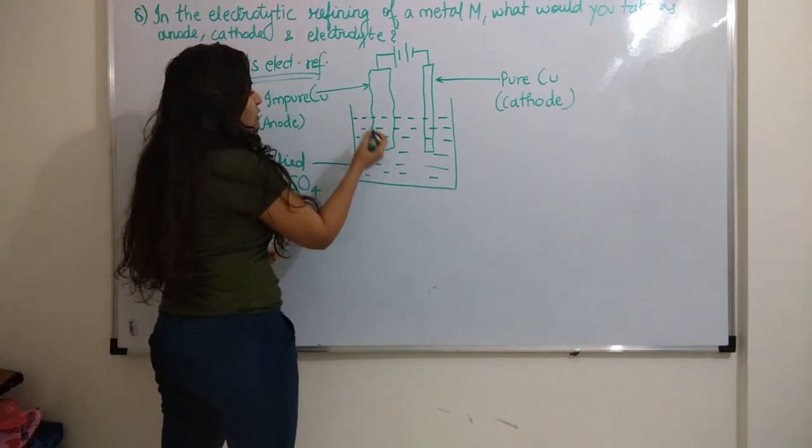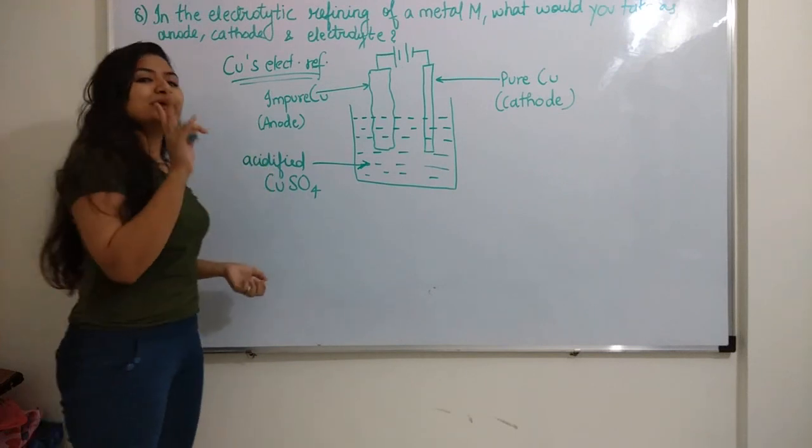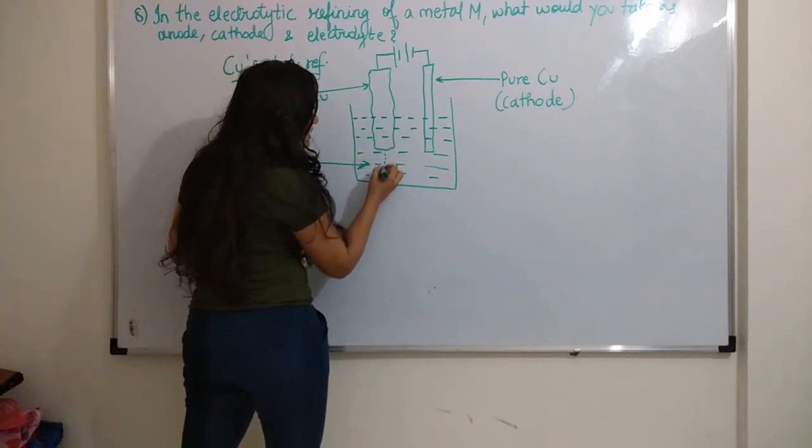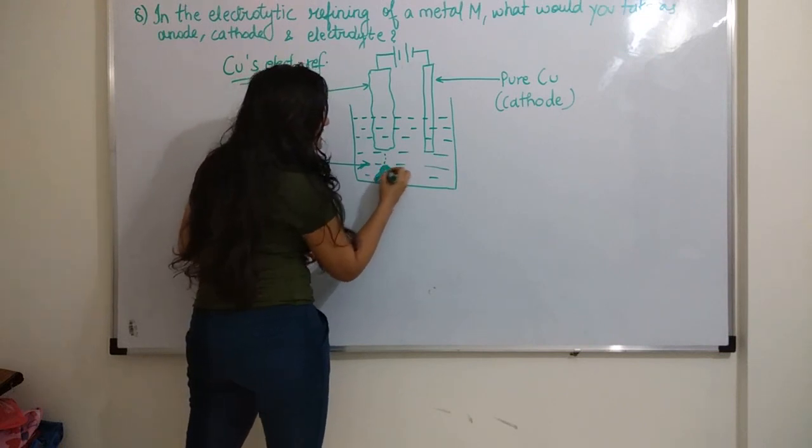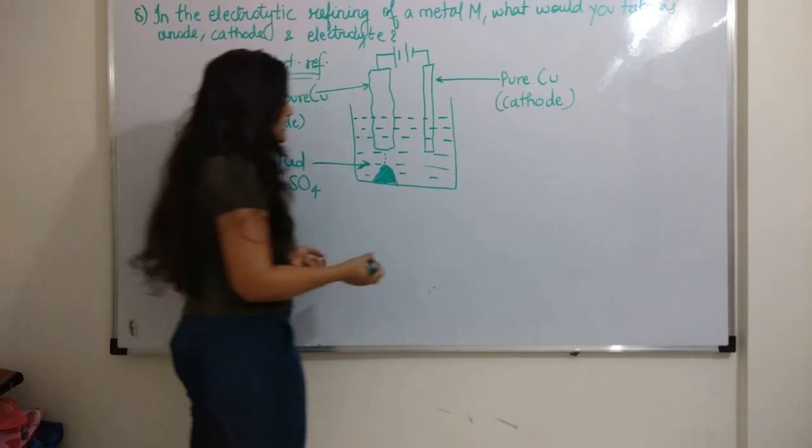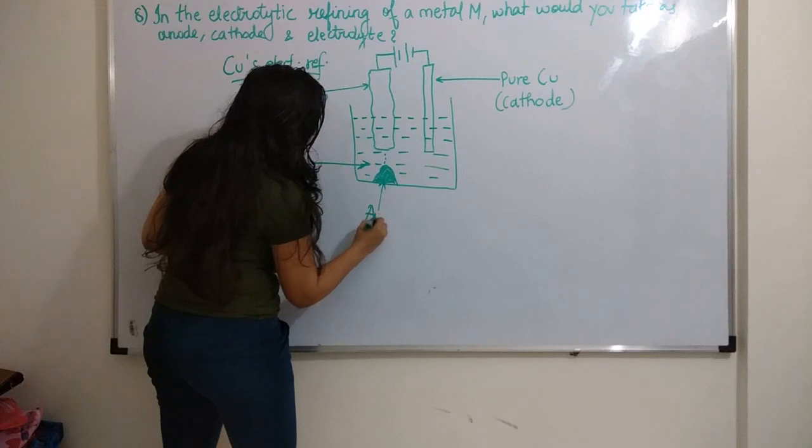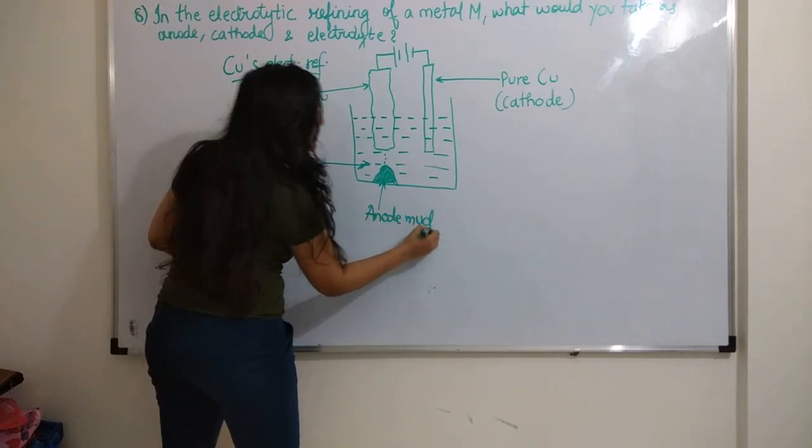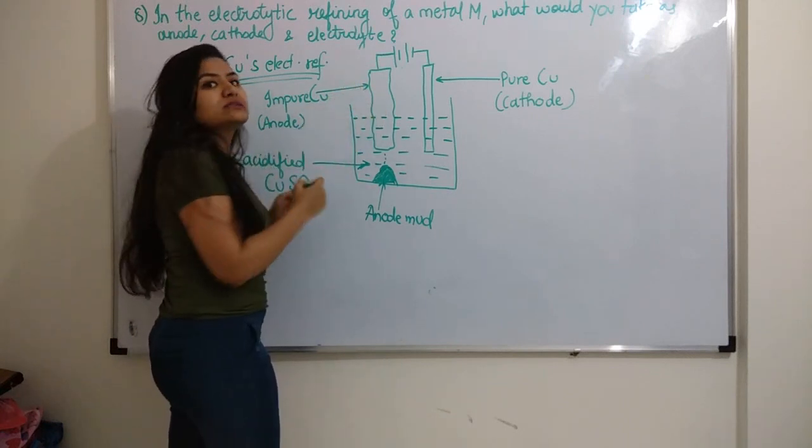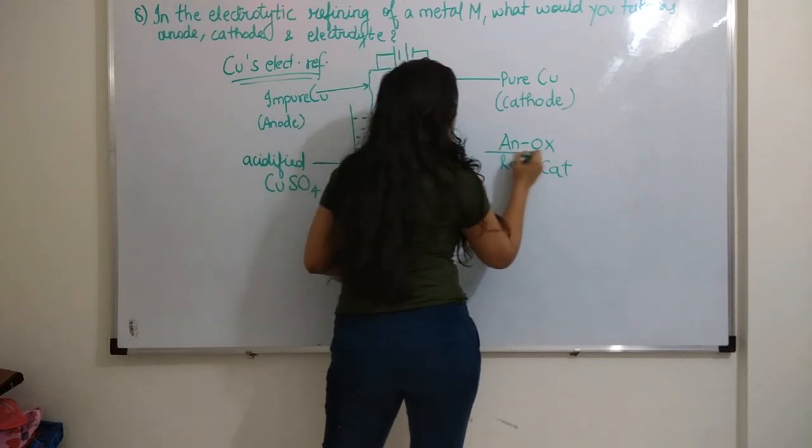Now as the electricity is passed through the electrolytic cell, anode will start shedding some impurities. There will be two types of impurities: one soluble and the other will be insoluble impurities. All the insoluble impurities will start depositing below anode. This is nothing but anode mud. It is deposited below anode. Now because this is anode, so at anode oxidation takes place.